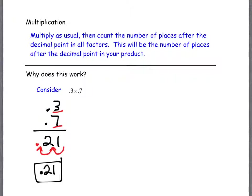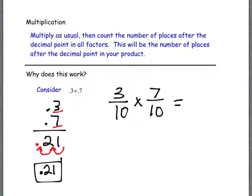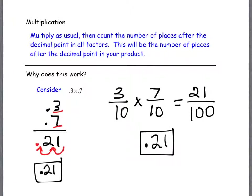The answer is fractions. What is 0.3 as a fraction? 3 over 10. What is 0.7 as a fraction? 7 tenths — and that's why we say '3 tenths' in terms of the decimal; the language actually matches. So when I multiply fractions, I multiply straight across: 3 times 7 is 21, and 10 times 10 is 100. So I get 21 over 100. How do I write that as a decimal? 0.21. That's why it worked.